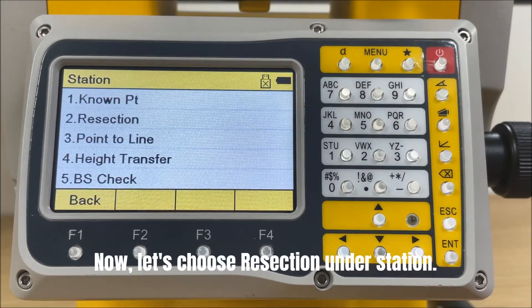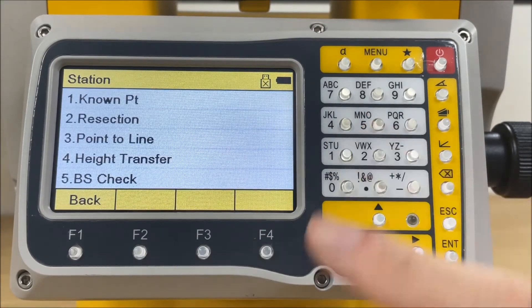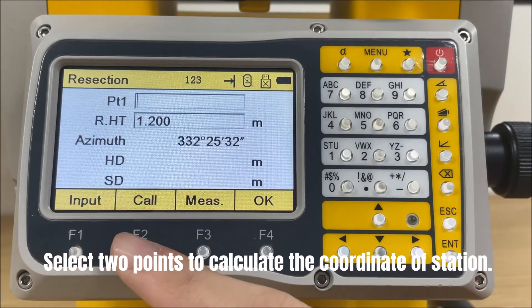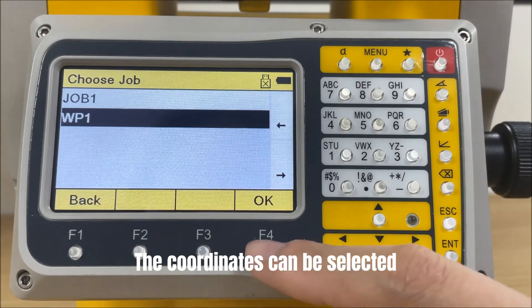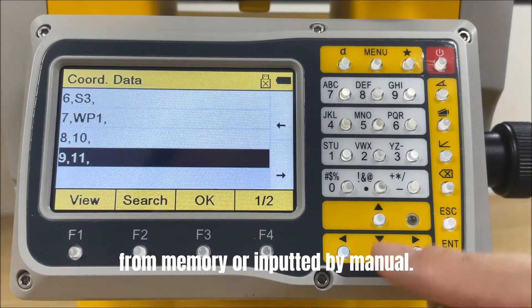Now, let's choose resection under station. Select 2 points to calculate the coordinate of station. The coordinates can be selected from memory or inputted manually.